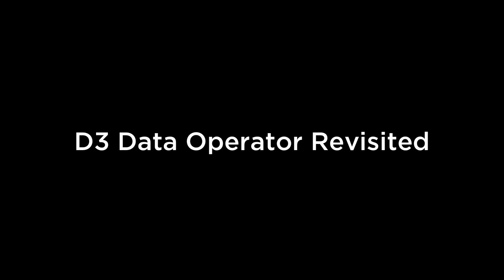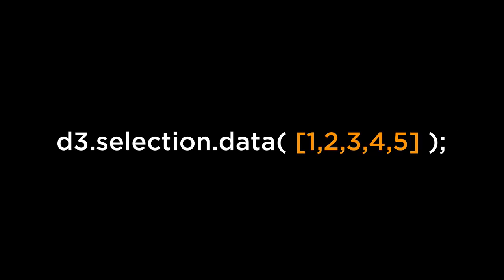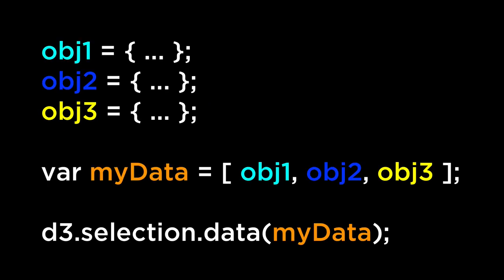D3 data operator revisited. The data operator joins the specified array of data with the current selection. We can define the data inside the D3 data operator, and we covered that the values passed in could be an array of data values — such as an array of numbers or objects — or even a function that returns an array of values. We then moved to define the array outside the data operator before feeding it in. Now, instead of filling the array with numbers, we can fill it with objects. The D3 data operator can take in an array of data values that contain objects, allowing us to store and bind a great deal more data to each DOM element.